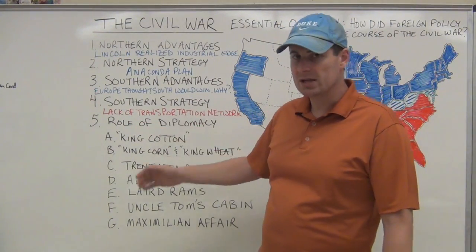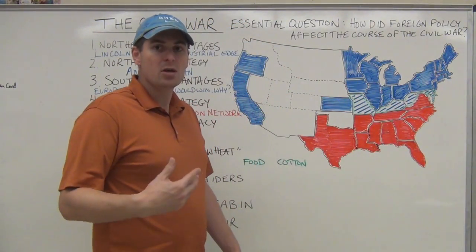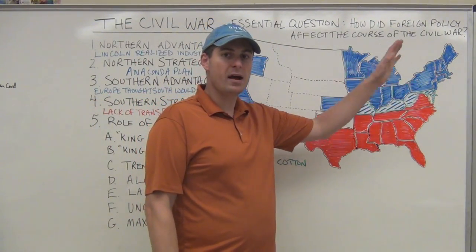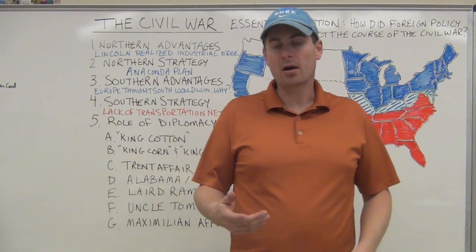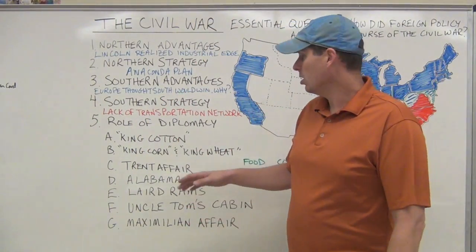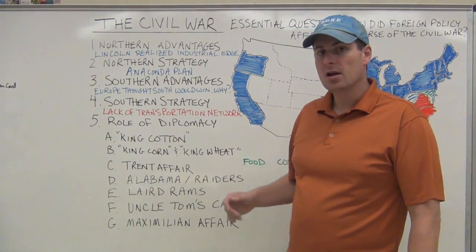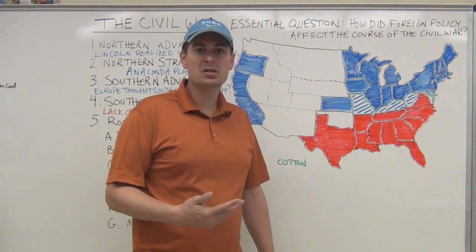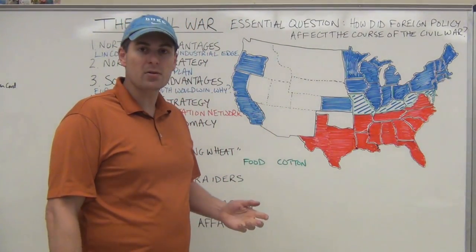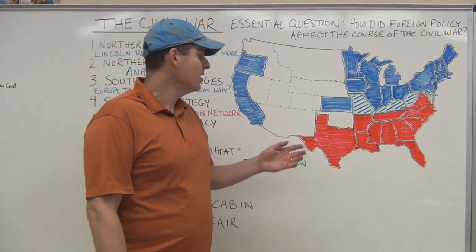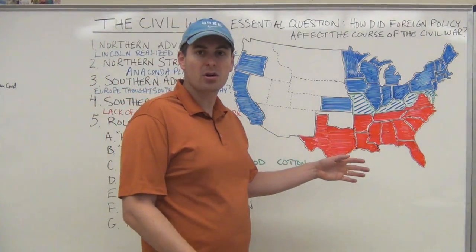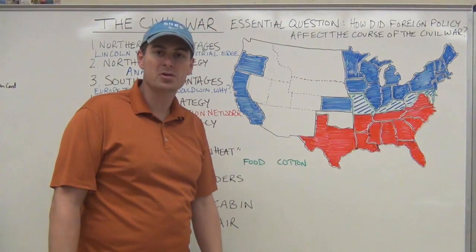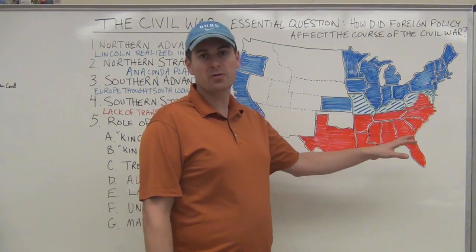This takes us to the role of diplomacy. You have these foreign intrigues that go on, and largely a lot of this comes from the fact that Britain and France are actively rooting for Southern success. It takes us first to King Cotton. Cotton was very, very important to the British economy. The Southern line of thinking, going back to the nullification crisis, had been that if war ever broke out, the British mills are dependent on Southern cotton. The South was by far the largest producer of cotton in the world.